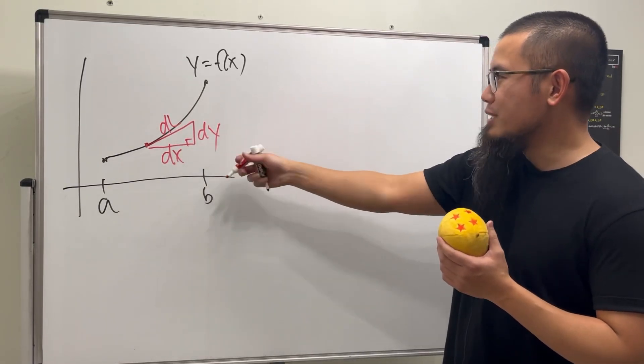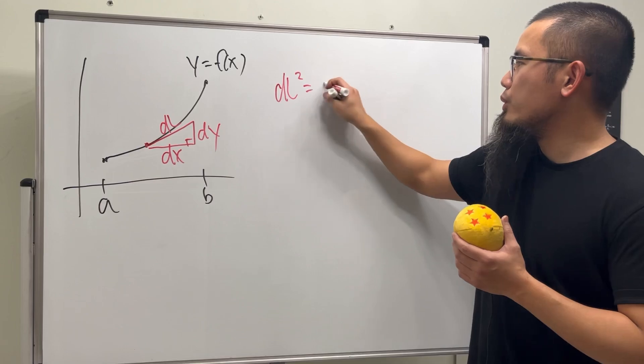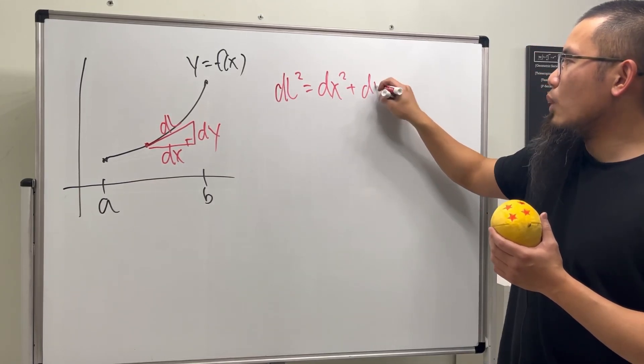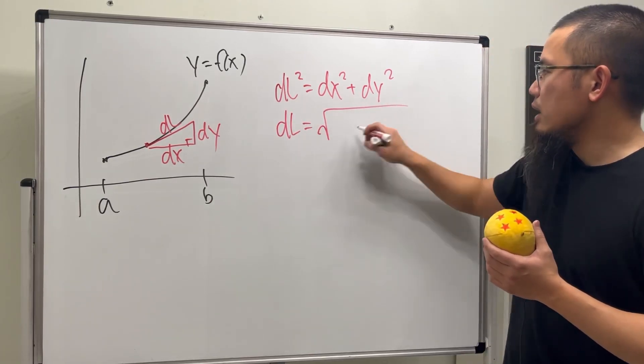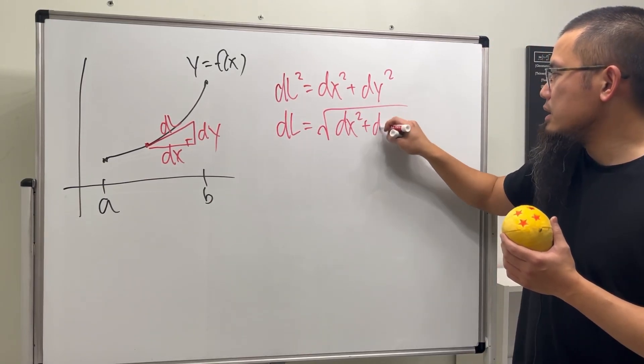And then we are going to use the Pythagorean theorem, so we know DL squared is equal to DX squared plus DY squared, and then take the positive square roots on both sides. We know that DL is equal to square root of DX squared plus DY squared.